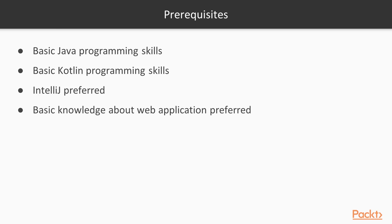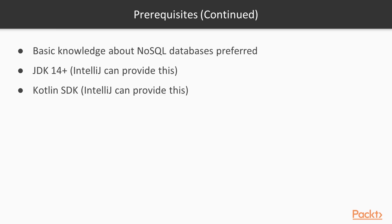What are the prerequisites to start this course? It would be nice to have some basic Java and Kotlin programming skills, and some knowledge about IntelliJ — though you can use your own development environment like Eclipse if you prefer. It would also be preferred to have some basic knowledge about web applications and NoSQL databases like MongoDB. If you have JDK 14 or newer installed, that is fine; if not, IntelliJ can provide this JDK. If you don't have the Kotlin SDK, IntelliJ can also download it.